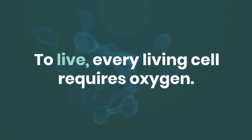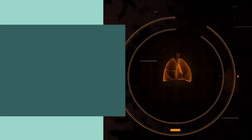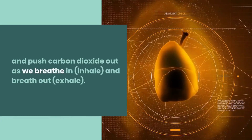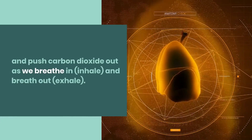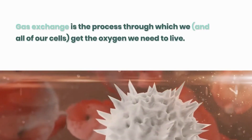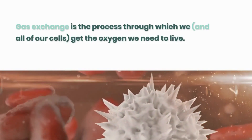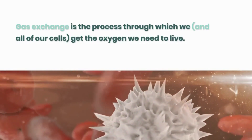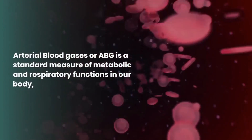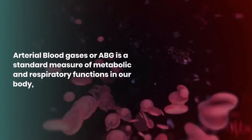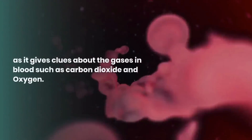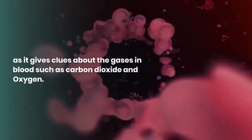To live, every living cell requires oxygen. Our lungs carry oxygen into our blood and push carbon dioxide out as we breathe in and breathe out. Gas exchange is the process through which we and all of our cells get the oxygen we need to live. Arterial blood gases, or ABG, is a standard measure of metabolic and respiratory functions in our body, as it gives clues about the gases in blood such as carbon dioxide and oxygen.